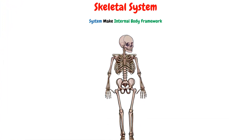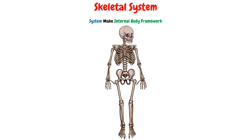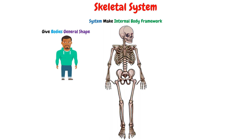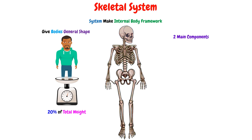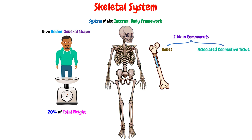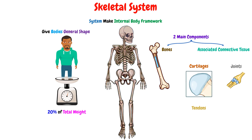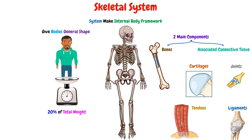The skeletal system is defined as the system that makes the body's internal framework, which gives our bodies their general shape. This system forms about 20% of the total weight of an adult human, and it is composed of two main components: the bones, and the associated connective tissue, such as the cartilage, the joints, the tendons, and the ligaments.